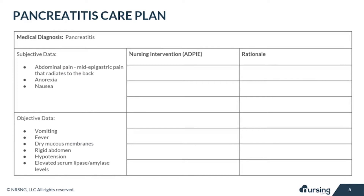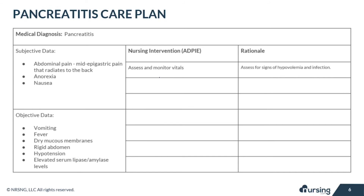For objective data, the patient might experience vomiting, especially after eating, because of digestive enzymes secreted by the pancreas. They might have a fever from inflammation or infection. You may see dry mucous membranes, especially if they're dehydrated. Their abdomen may become rigid from peritoneal irritation by excessive enzyme secretion into the abdominal cavity. Watch for hypotension due to dehydration. Lipase and amylase levels will likely be elevated, as the inflamed pancreas excretes more than usual.